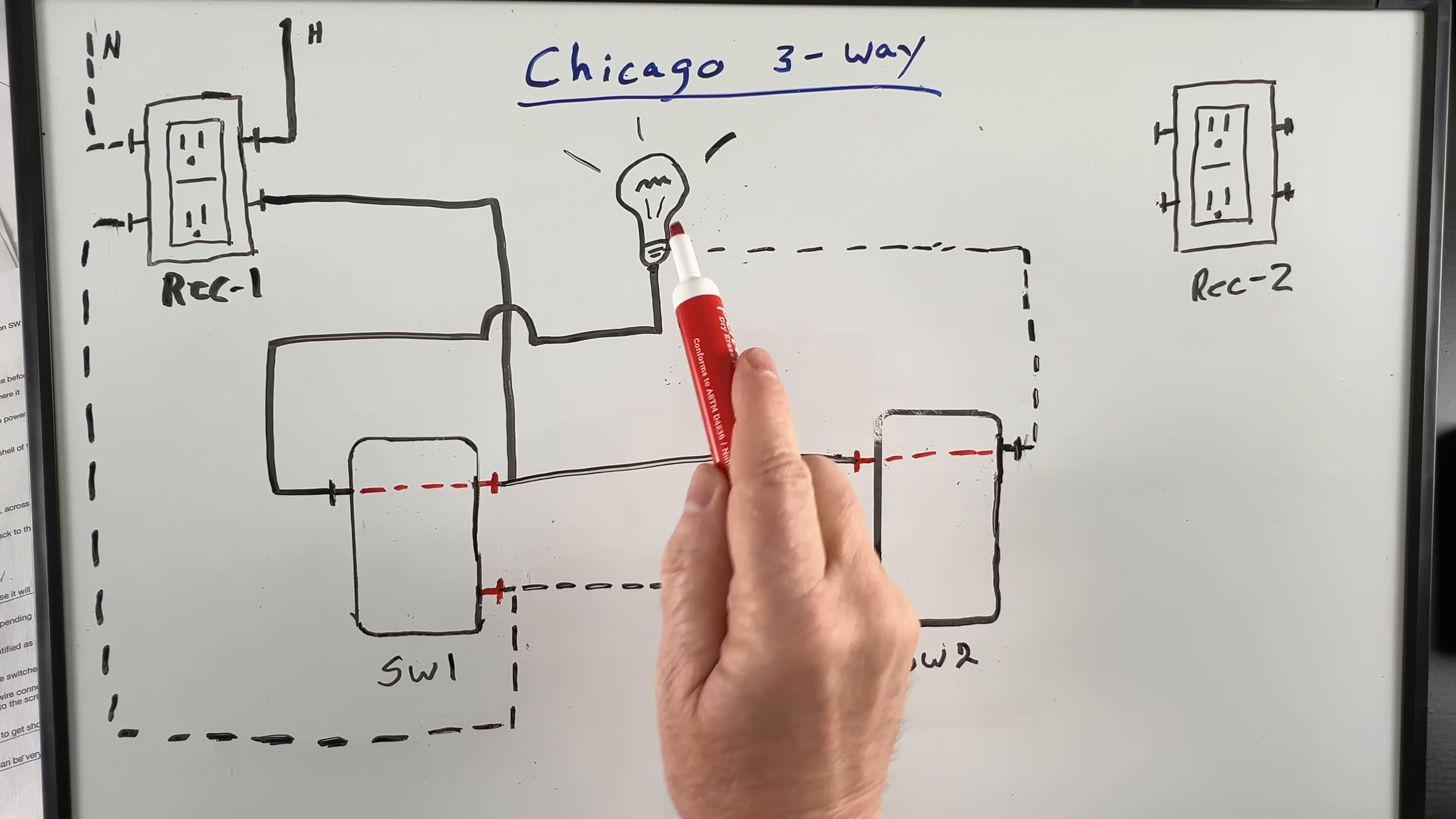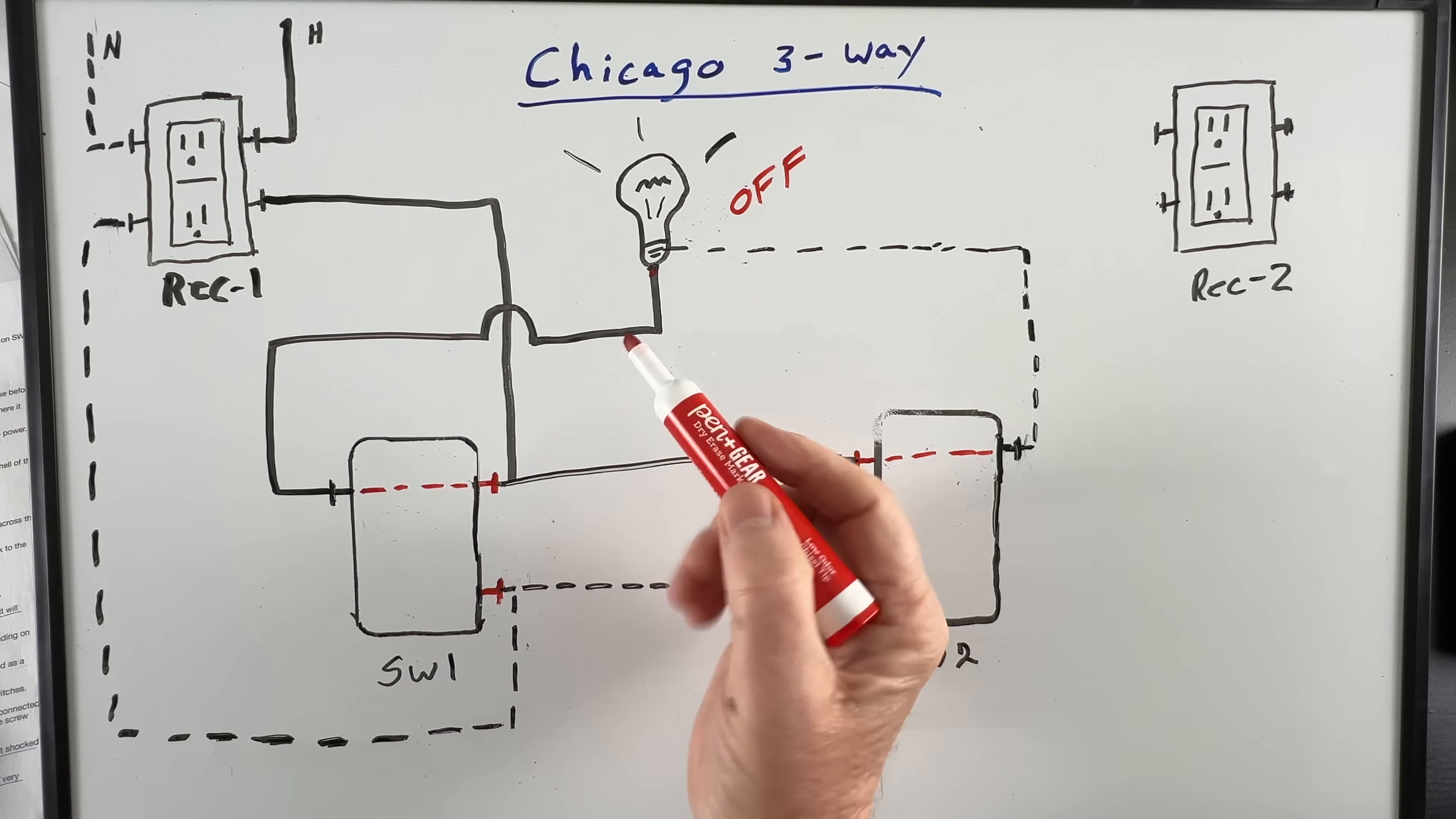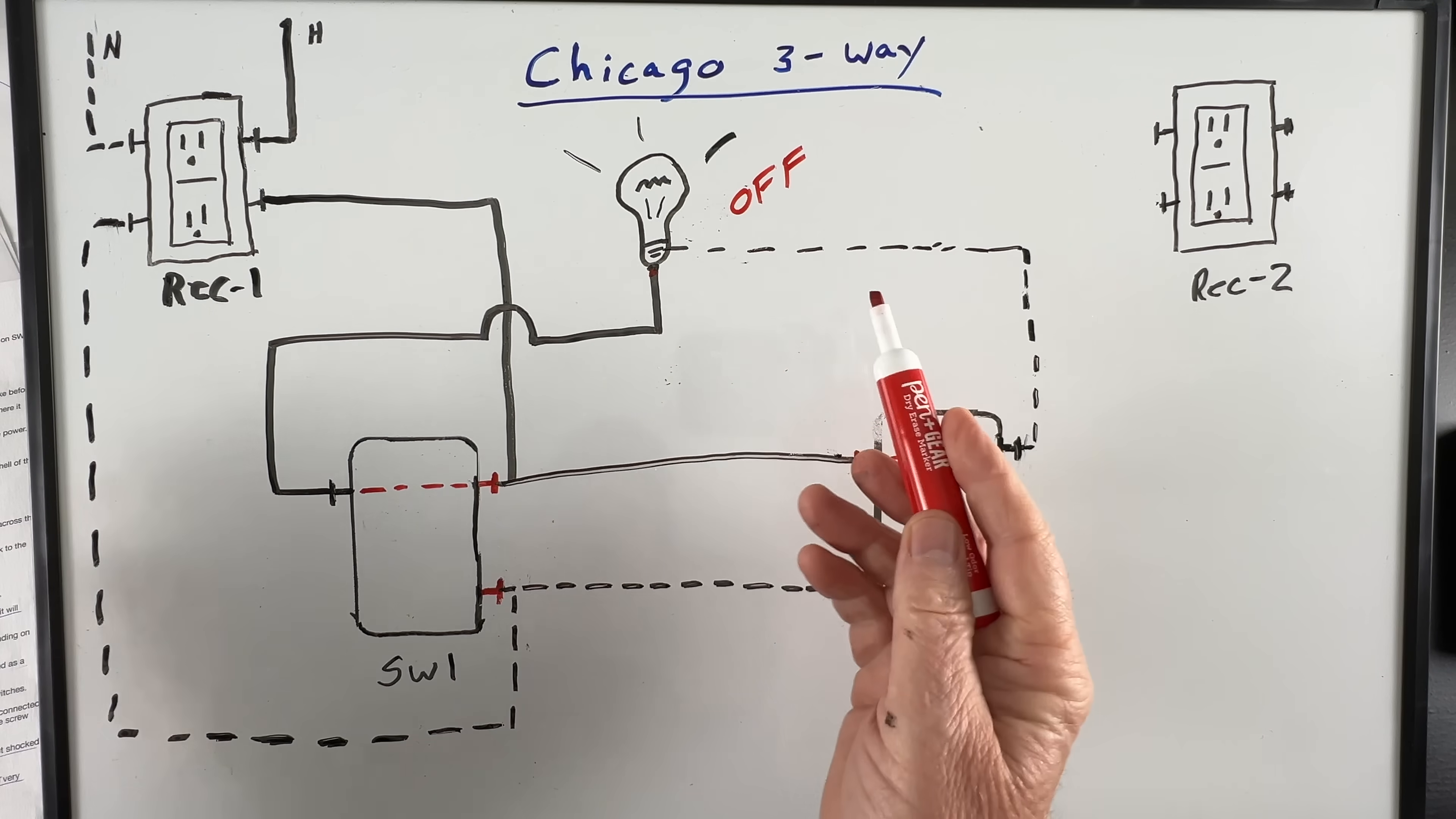Now both our hot tab and our neutral screw shell on the light are energized, but with no neutral return the light will be switched off. This obviously presents the hazard of having power on both the hot tab and on the neutral screw shell of the light, but also we have an energized light fixture that appears to be off.